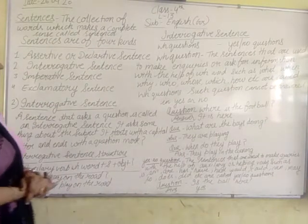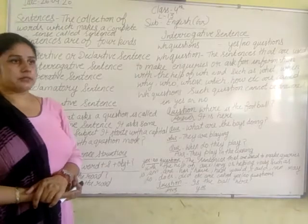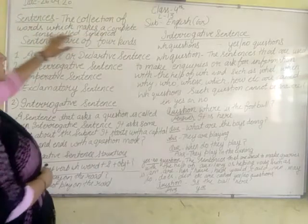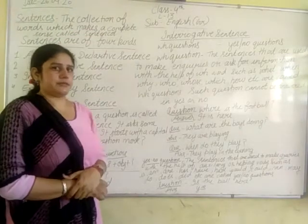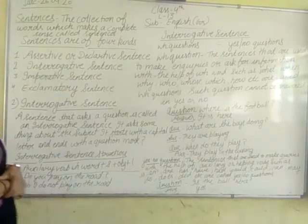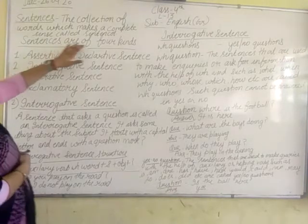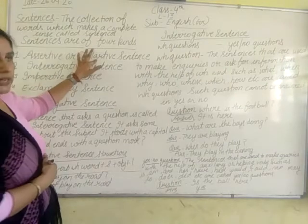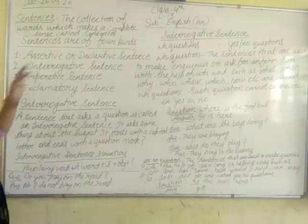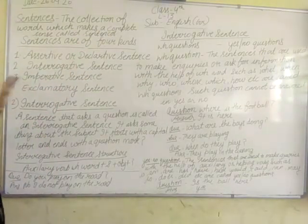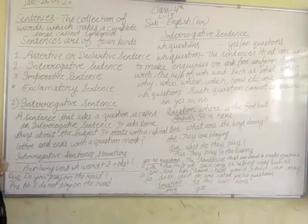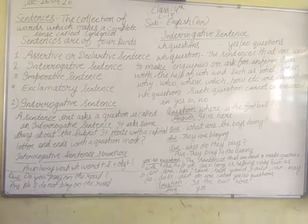Students, I have told you about sentences. Sentences are a collection of words which make a complete sense, called a sentence. I have told you the definition and how many types of sentences there are. Sentences are of four types: first is assertive or declarative sentence, second is interrogative sentence, third is imperative sentence, fourth is exclamatory sentence. Today we have to learn interrogative and declarative sentences.